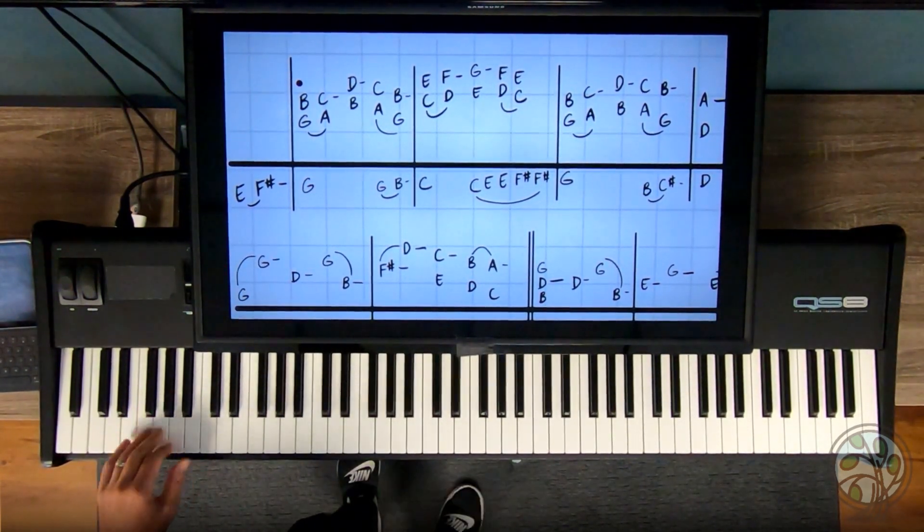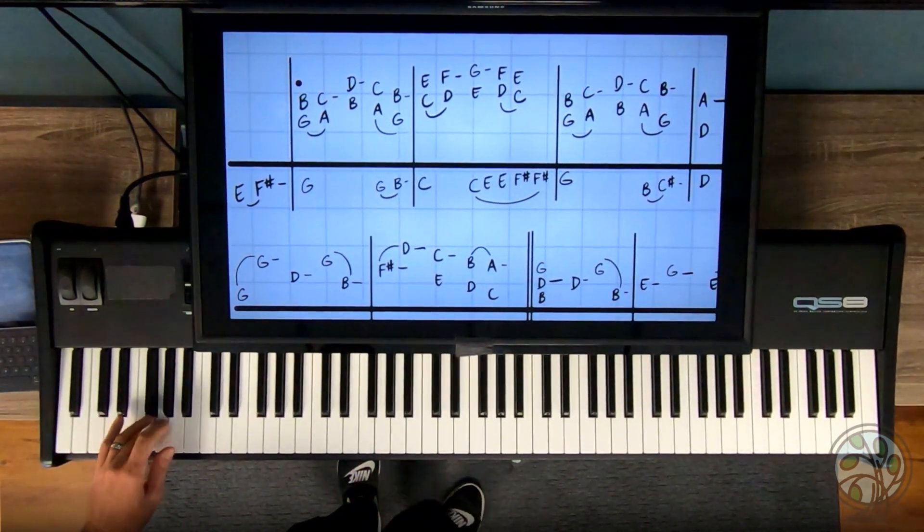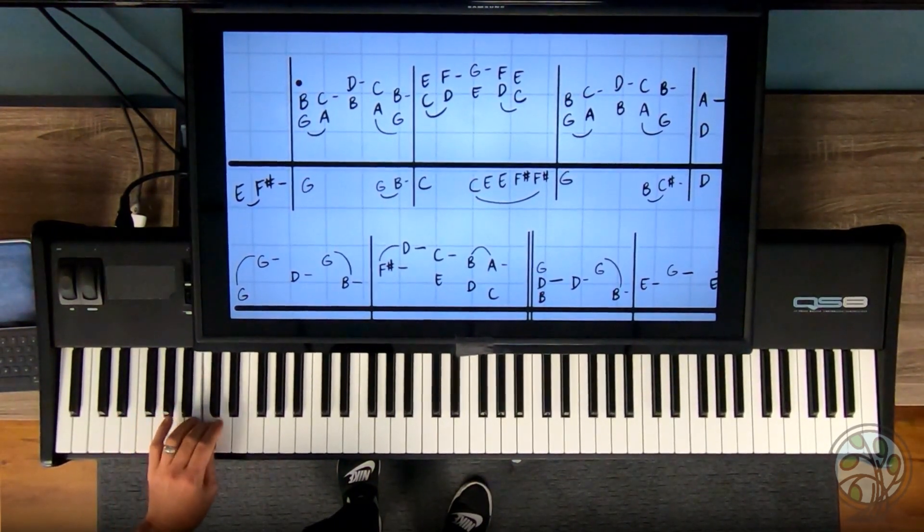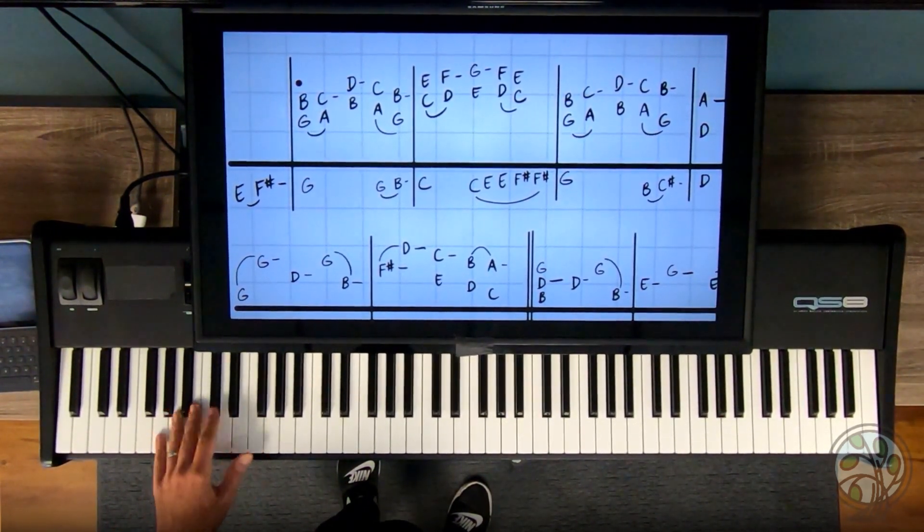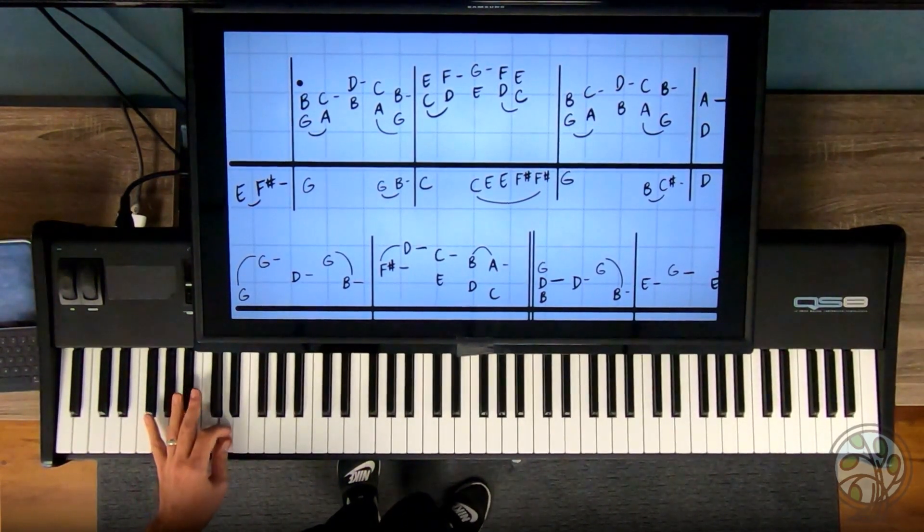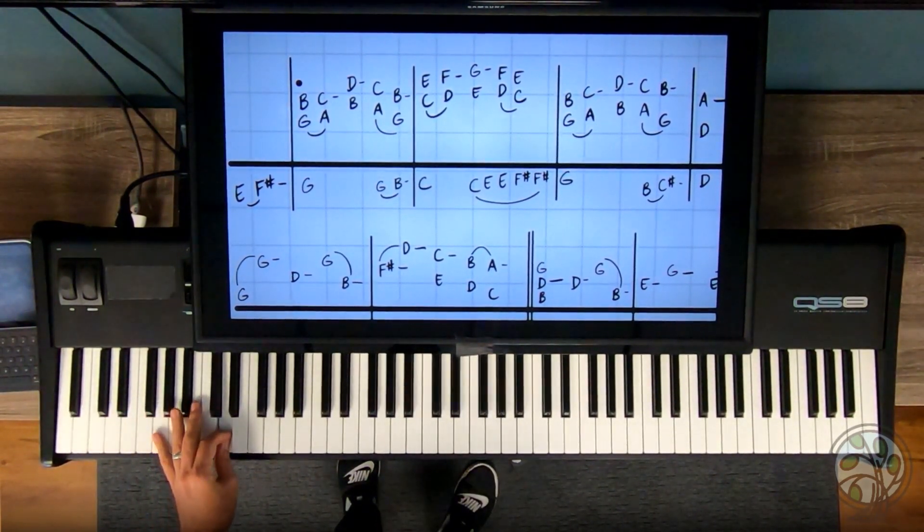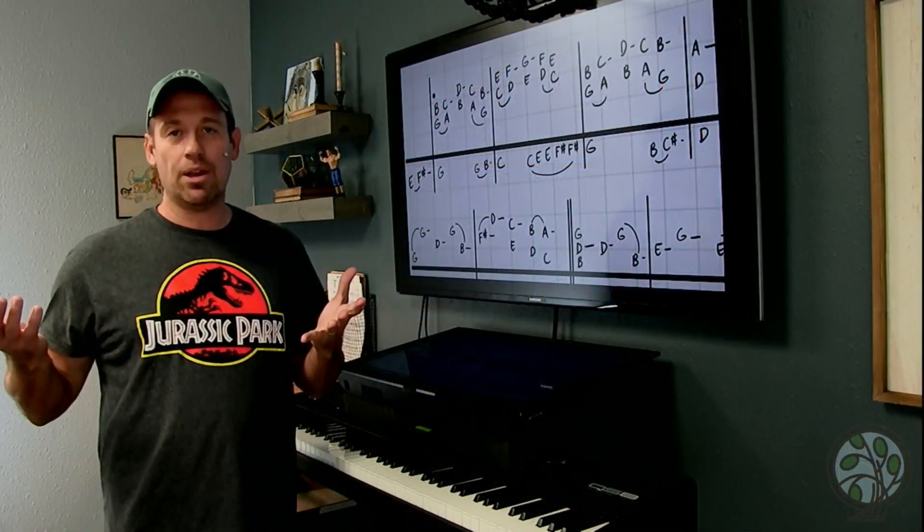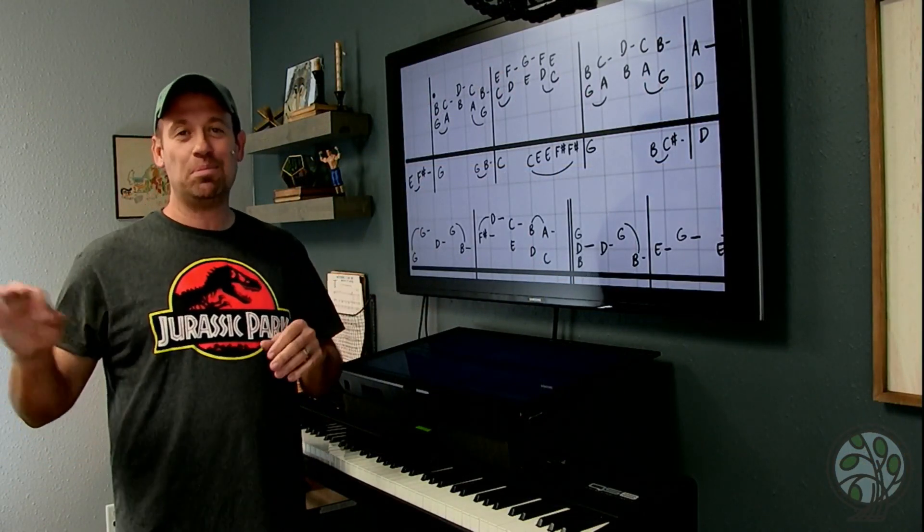But this bass line is so important, you need to be able to play it all by itself. Let's go from the beginning. 1, 2, go. 1, 2, 3. 1, 2. 1, 2, 3. We're going to do that over and over and over again. All right?